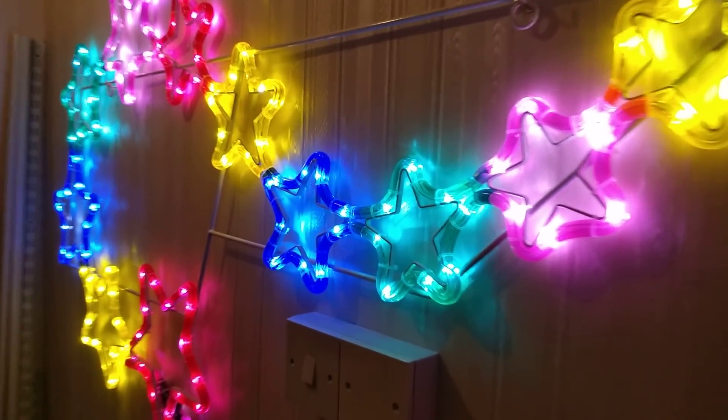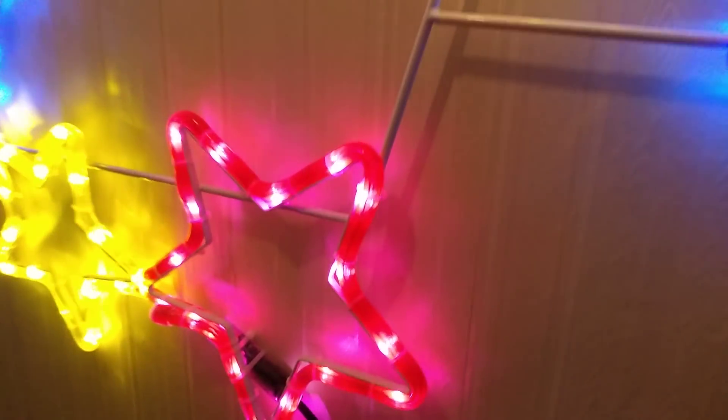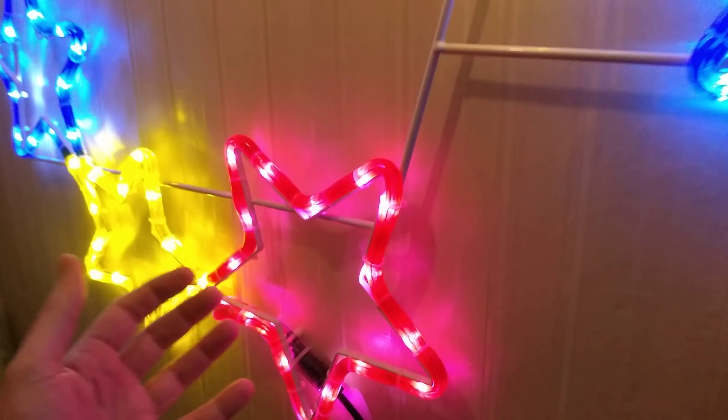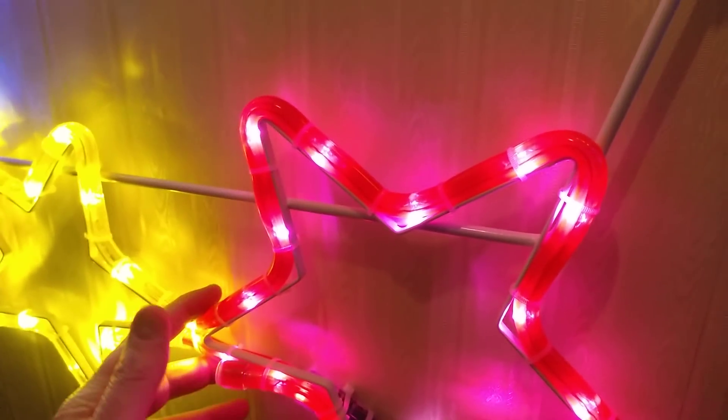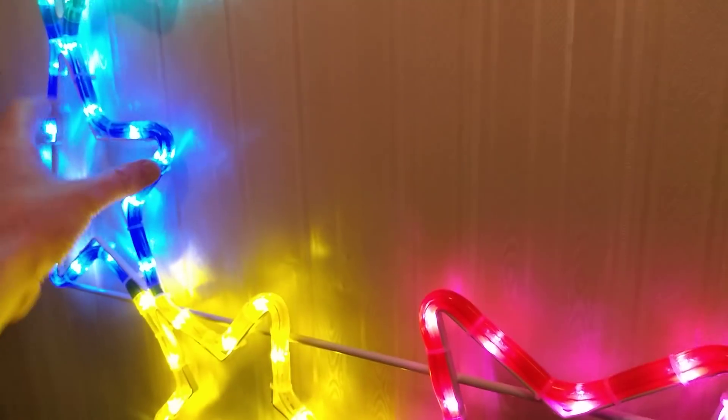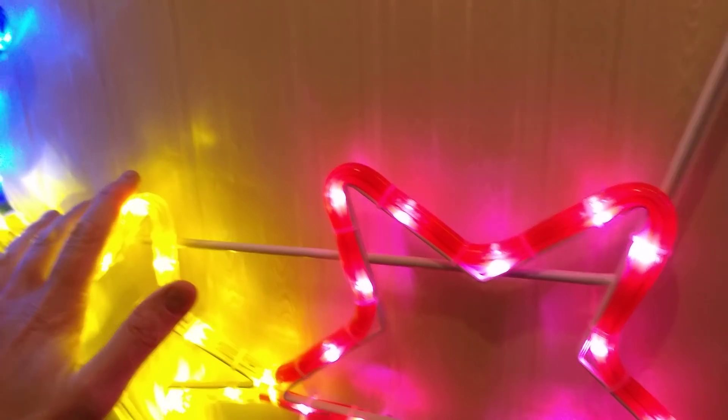I popped into the local DIY store, well the main big DIY store, B&Q on the Isle of Man, and I was looking at their Christmas lighting display. I saw this and the most interesting thing about it was the number of colors and the way it looked like sleeved single color rope light, but it's kind of sleeved but not sleeved.